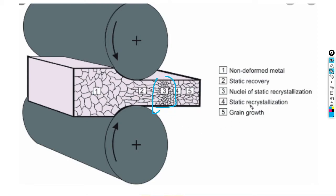In the recovery stage, after the material is deformed, you can observe new grains rising. In this stage, the grains become fine rather than thick, forming fine grains instead of the static recovery stage structure.